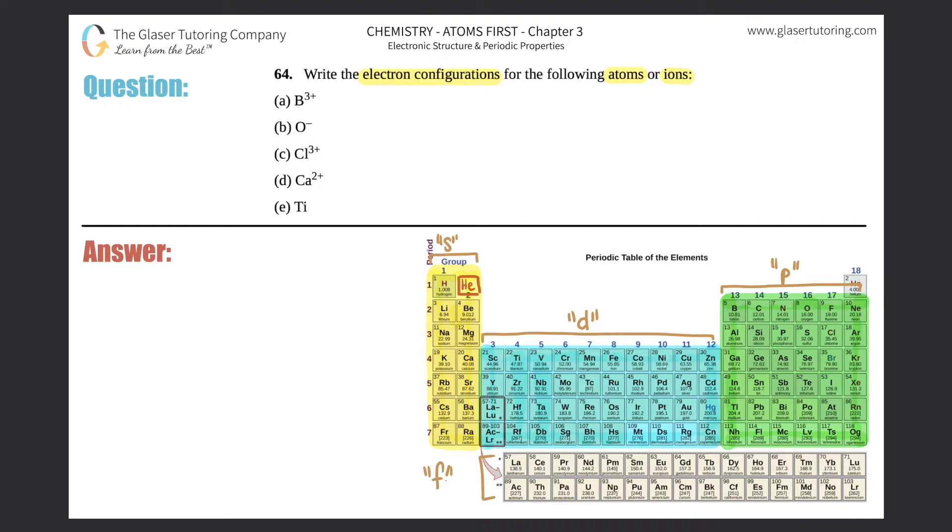Remember how we find electron configuration for ions, which are just charged atoms, whether they're positive (aka cations) or negative (aka anions). Remember you're always going to write the electron configuration for the regular atom first, and then you will adjust for the charge.